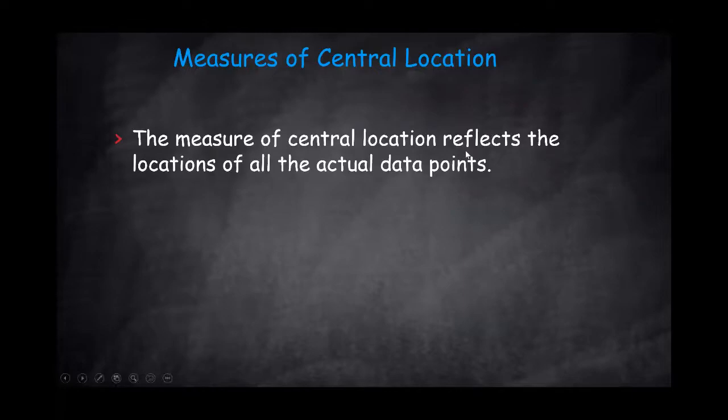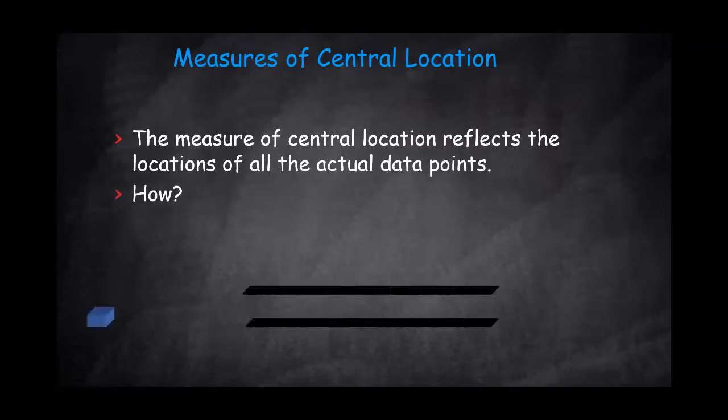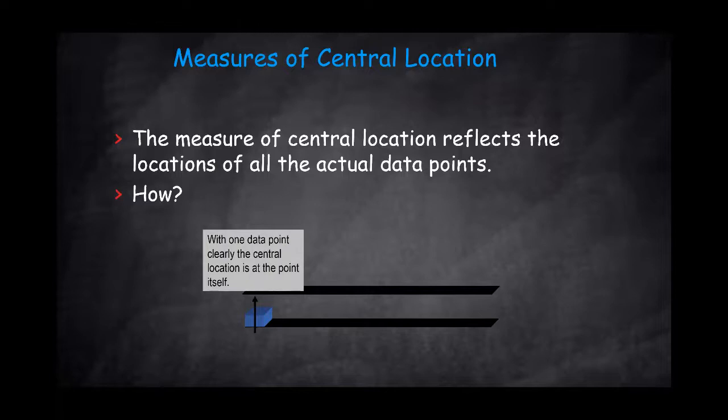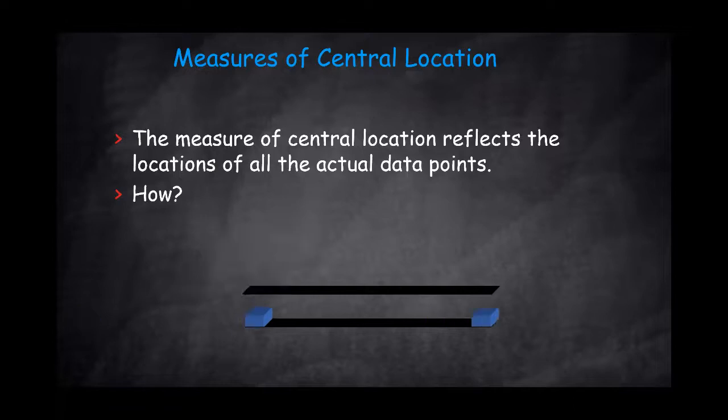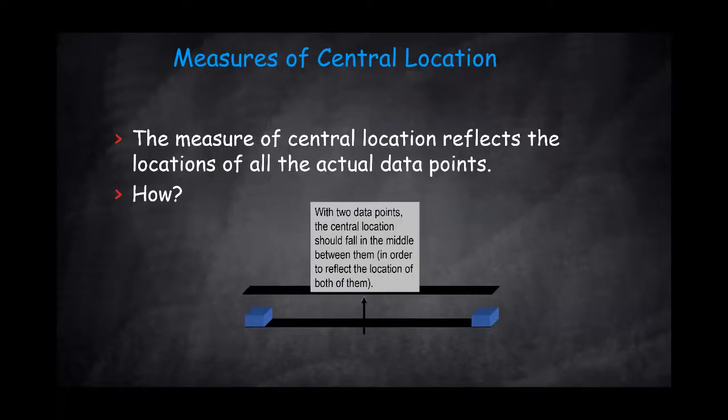The measure of central location reflects the location of all the actual data points. How is it being done? With one data point, clearly the central location is at the point itself. When we're adding another point to two data points, the central location will fall exactly in the middle between the two points, which will reflect the location of both of them.